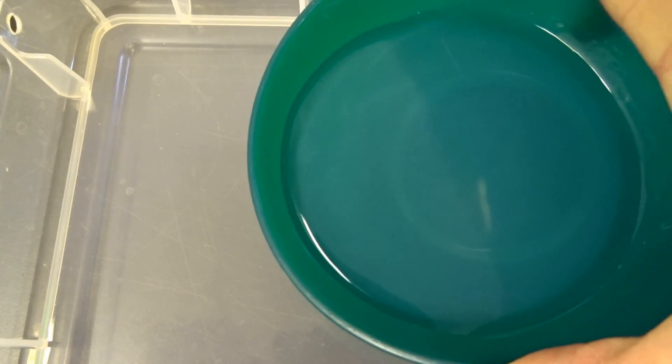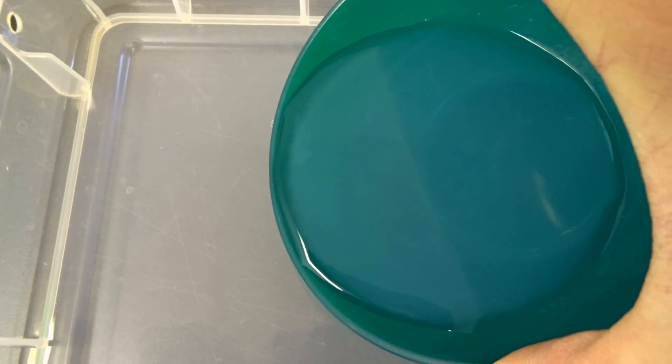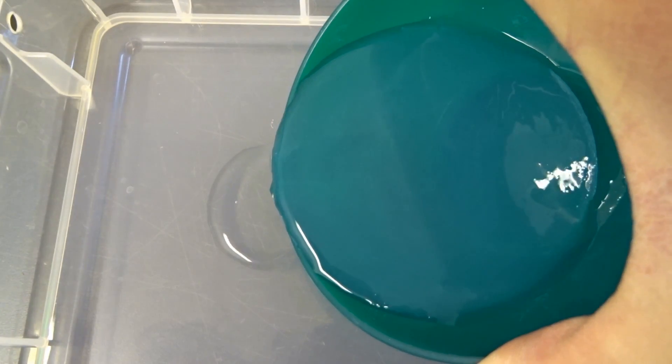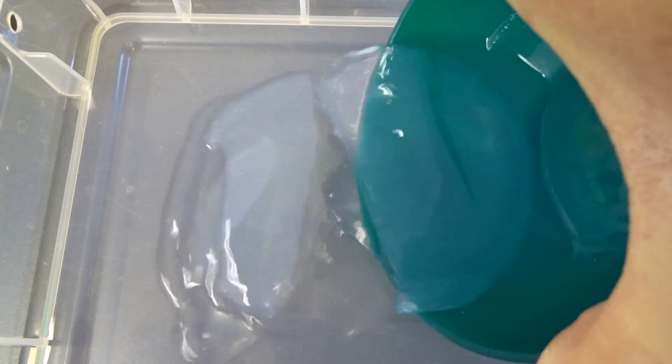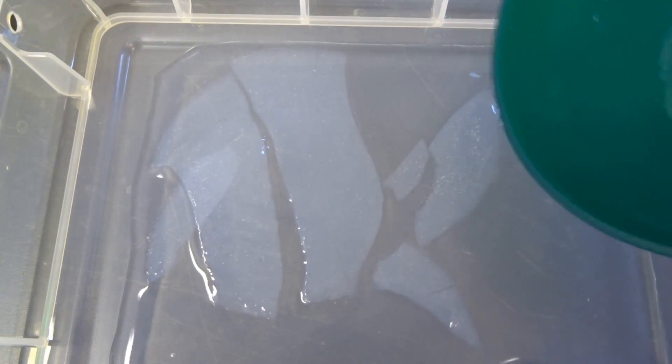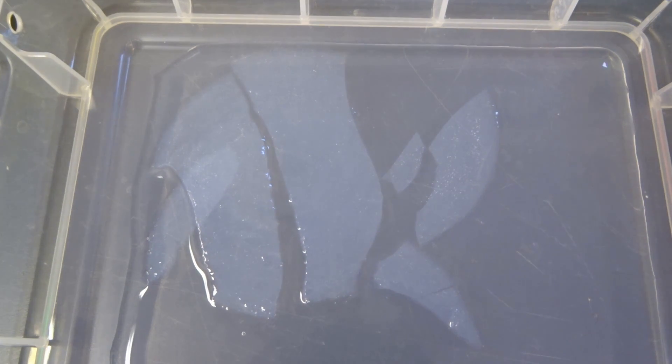Here you see the gel that formed in the green dish, and I'm now pouring it off into this plastic container, and you see there's first some water covering the top, and then there's the gel underneath, which unfortunately broke apart as I pour them out, since they are really, really fragile.